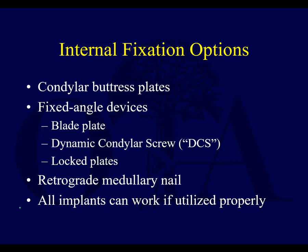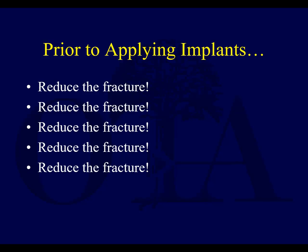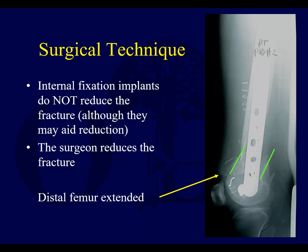Before even getting into implants, prior to applying them, it's really important that you reduce the fracture. This is probably the most challenging part of these cases — understanding how to overcome the deforming forces and understanding the anatomy. Internal fixation implants typically will not reduce the fracture. They may aid in reduction if you have a properly contoured implant and use cortical screws, but you can't count on that. Here's an example where the fracture has been fixed but there's some angulation, and the distal femur is extended because those forces weren't completely overcome.